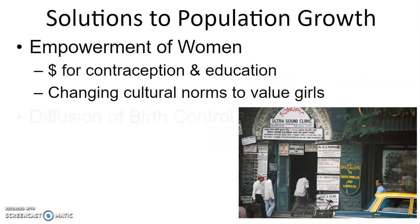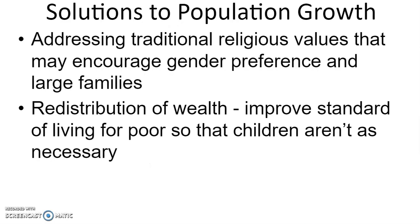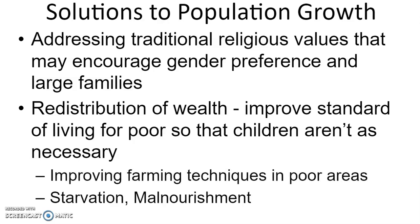The number one solution to population growth is empowerment of women — gender empowerment, more money for contraception and education, equal rights and access to jobs, and changing cultural norms to value girls. The transition from Stage 2 to Stage 3, lowering birth rates, is the hardest stage to progress through because it requires serious cultural change in the status of women and views on birth control. We must also address traditional religious values that encourage gender preference and large families, redistribute wealth, improve standards of living so children aren't as economically necessary, improve farming techniques, and limit starvation and malnutrition.